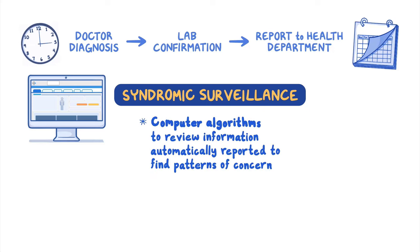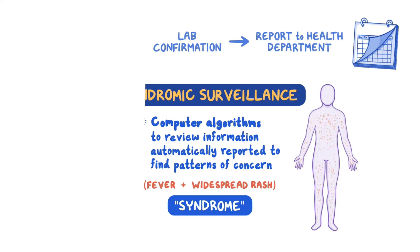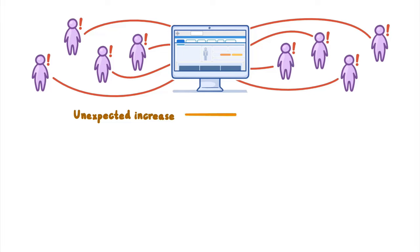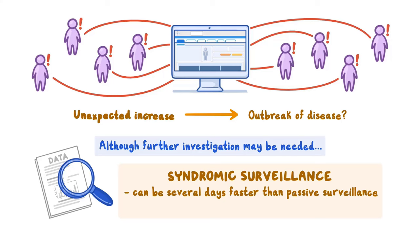Syndromic surveillance relies on computer algorithms to review information automatically reported from every healthcare visit to find patterns of concern. For example, a syndromic surveillance system may identify an increase in sets of signs and symptoms linked to a disease, such as fever plus widespread rash. A group of symptoms which consistently occur together are referred to as a syndrome, which is where the system got its name. The power of syndromic surveillance is that it can alert public health experts several days before a problem is detected through passive surveillance, and it is also useful to monitor how an event of public health concern is changing over time.